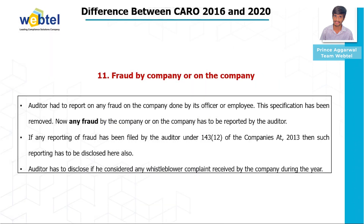Clause eleven is Fraud by or on the Company. The auditor now has to report any fraud by the company or on the company. Earlier, the auditor had to report only fraud done by its officers or employees. If the reporting of fraud has been filed by the auditor under Section 143, Clause 12 of Companies Act 2013, then such reporting has to be disclosed there also. The auditor also has to disclose if he has considered any whistle-blower complaints received by the company during the year.